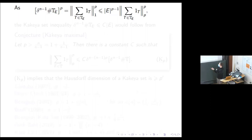This is Hölder's inequality. This is the left-hand side of our set inequality. We can rewrite it because this is the measure of a tube: if we integrate the characteristic function of a tube we get this, and then by Fubini's theorem we can pull this out, getting the number of tubes to the power of P. Then because the tubes are all supported in E, we apply Hölder's inequality and get the support of the function and this L^P norm.